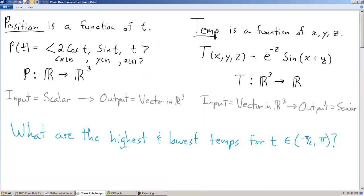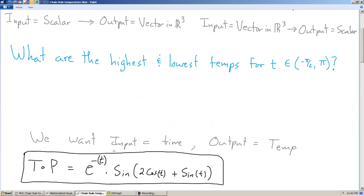Remember we're trying to figure out the highest and lowest temperatures in this given interval. And the way of doing that is to compose these two functions so that your input is time and your output is temperature. That's what we want. It would be really great if we could input time and output temperature. Well, as it turns out we can do that. And the way that we do that, let's move this up here.